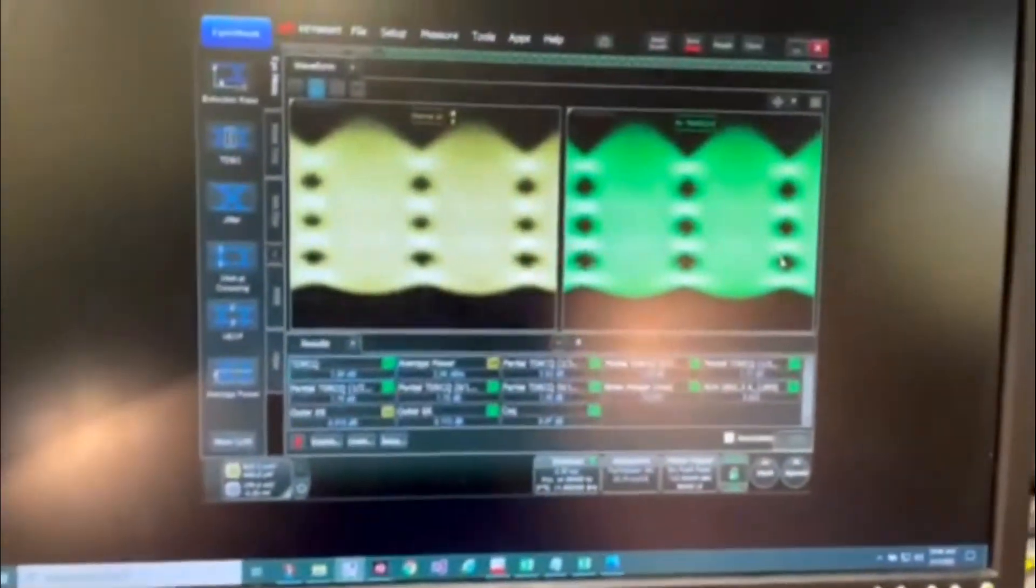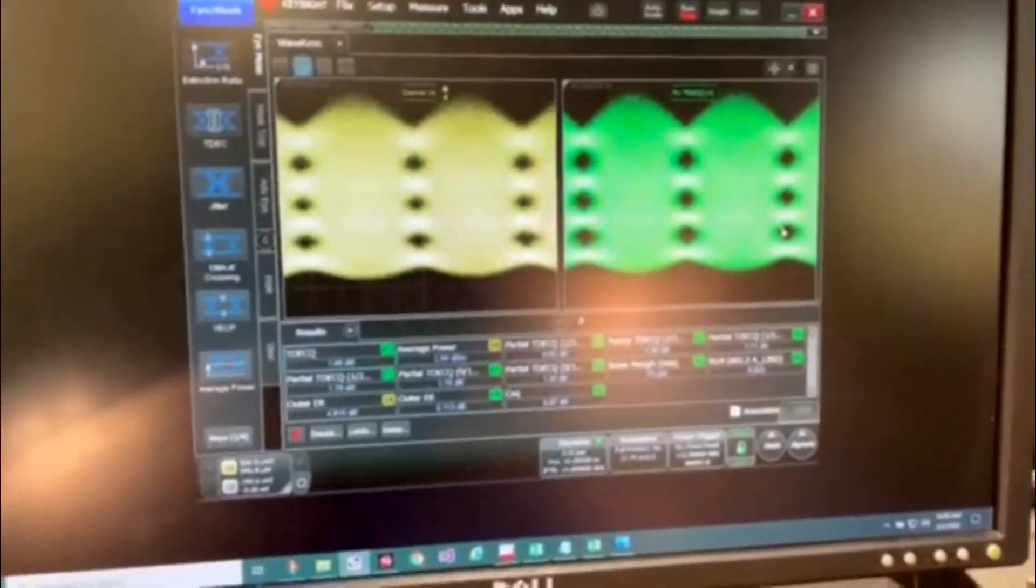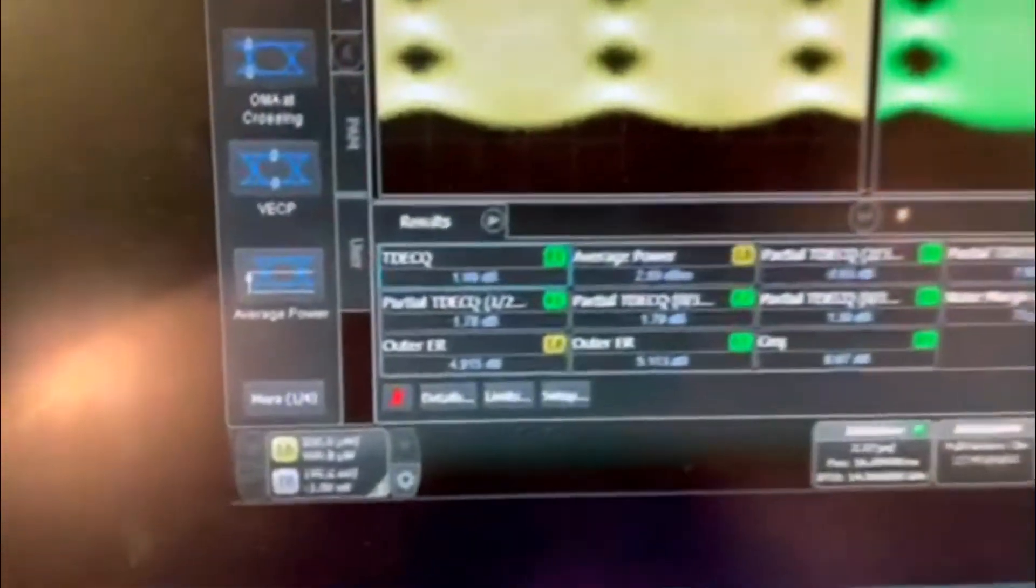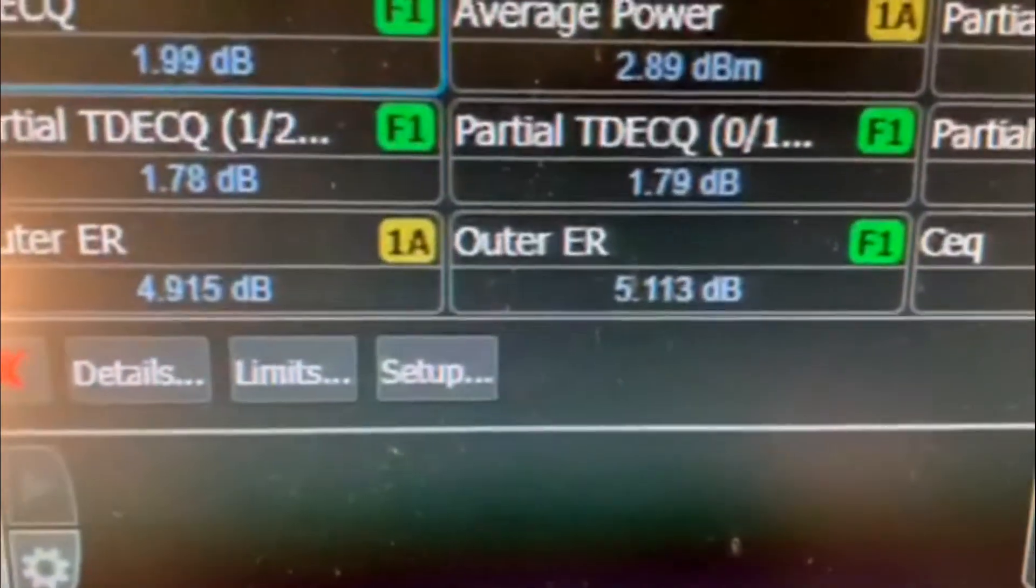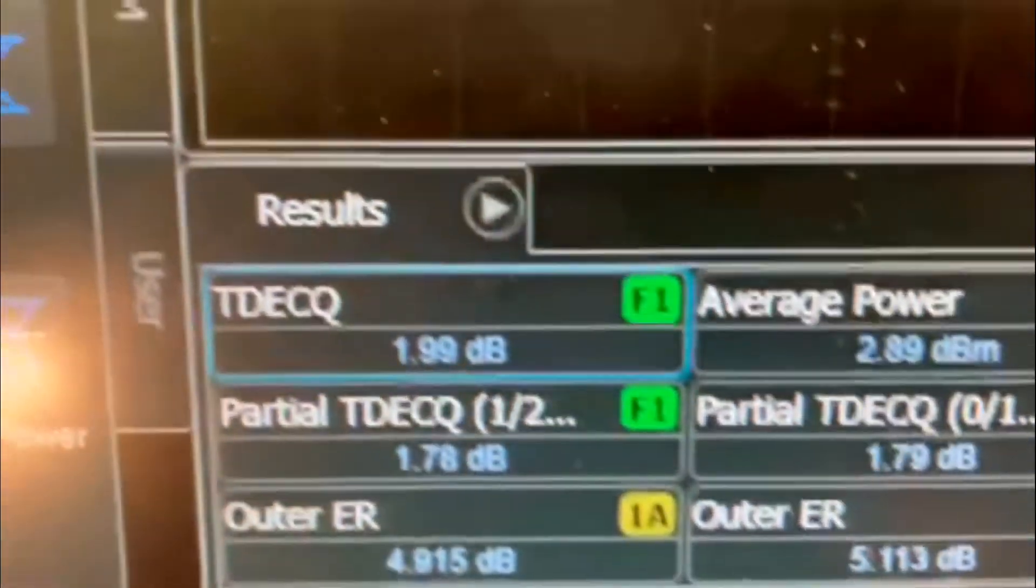The eyes are displayed on this 200 gig DCA where we can see an outer extinction ratio of about 5 dB and TDEC-Q of just under 2 dB with good linearity and eye symmetry.